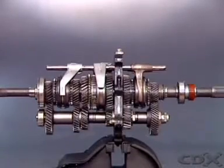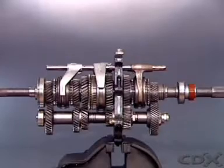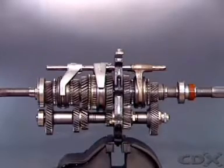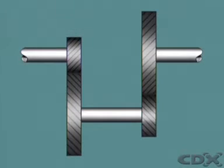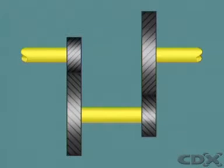Compound gear trains have two or more pairs of gears in mesh so that they rotate together. This compound gear train has gears on three shafts.